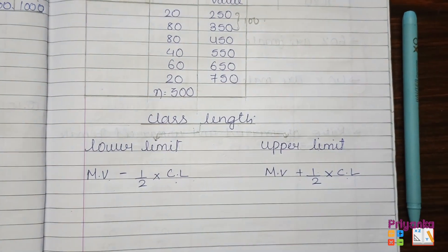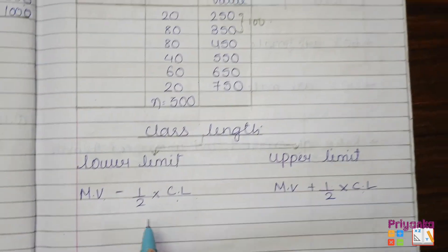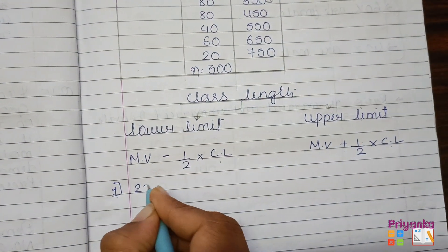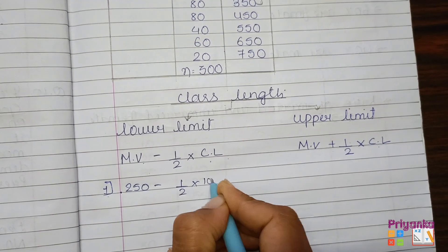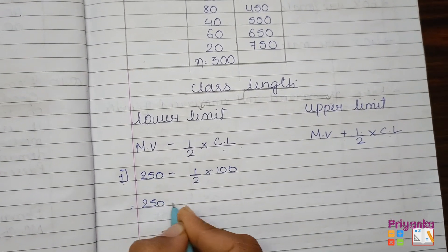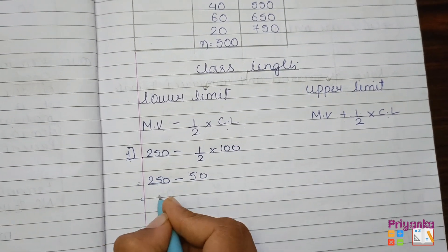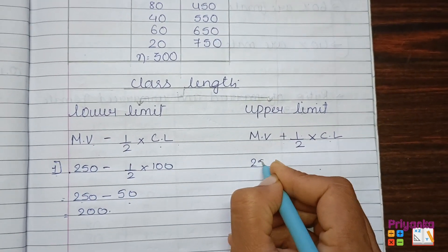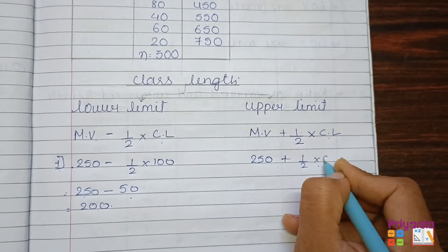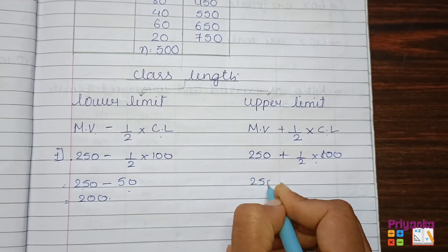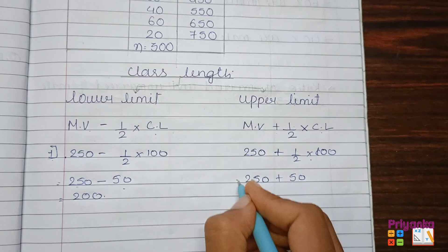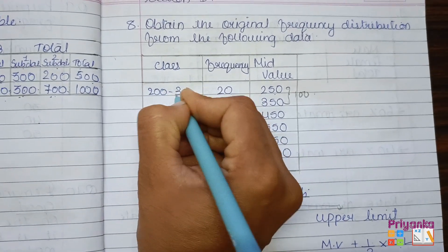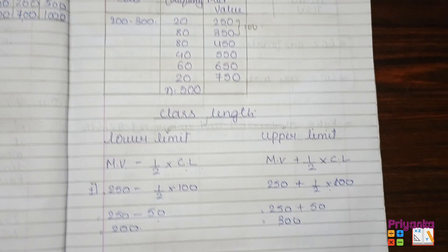The class length is 100. For the first row, mid value is 250. Lower limit: 250 minus half of 100, which is 50, so 250 minus 50 equals 200. Upper limit: 250 plus half of 100, which is 50, so 250 plus 50 equals 300. So the first class is 200 to 300.